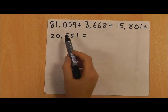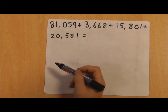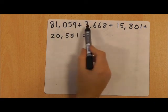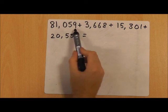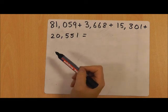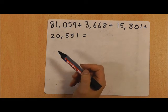Now we're going to use column addition to add numbers with increasing complexity. We have lots of different numbers with a different amount of digits. When we're adding, it doesn't matter what order we add in, but for the sake of this question I'm going to start with the biggest number.